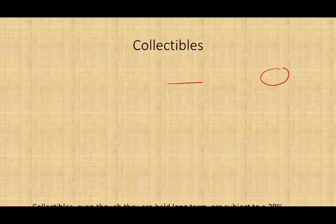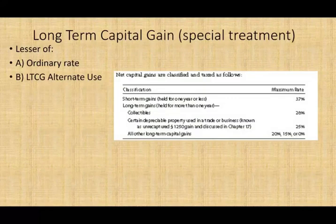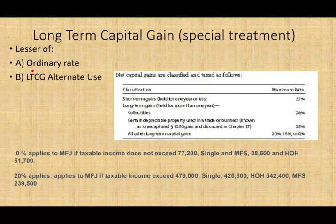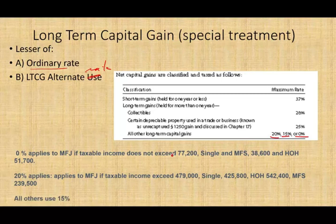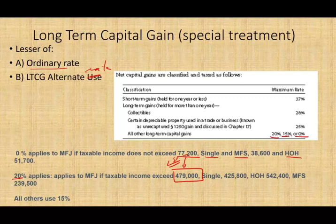For the other long-term capital gain — the non-collectible — you apply the lesser of the ordinary rate or the long-term alternate rate, which could be 20%, 15%, or zero. You apply the zero percent when your taxable income does not exceed $77,200 if you're married filing jointly. You use the 20% when your taxable income exceeds $479,000, and in between you would use 15%. If you're married filing separately, single, or head of household, you have different thresholds.